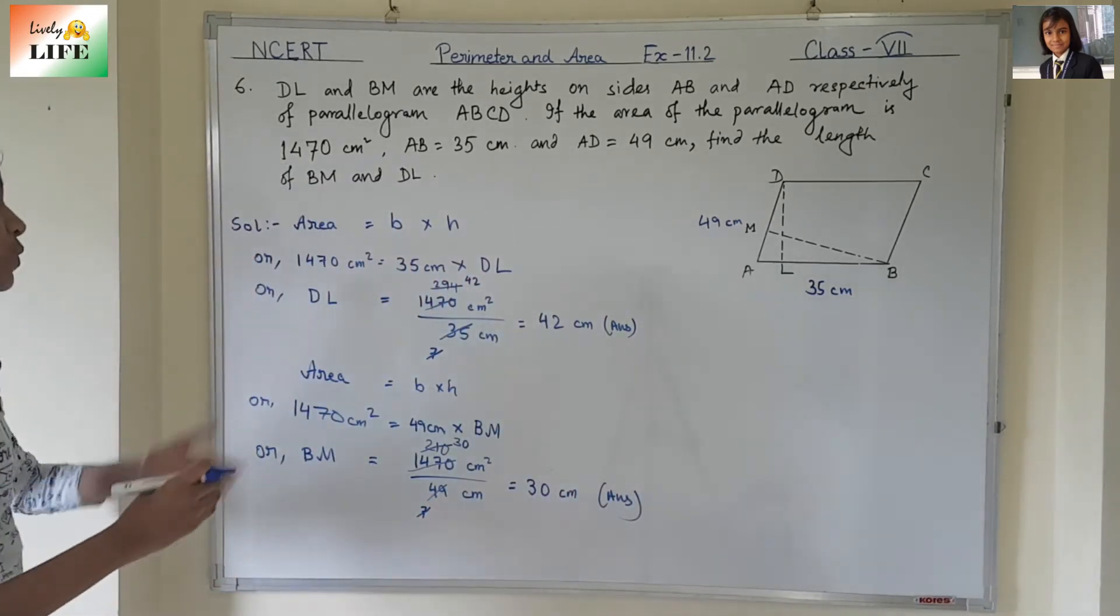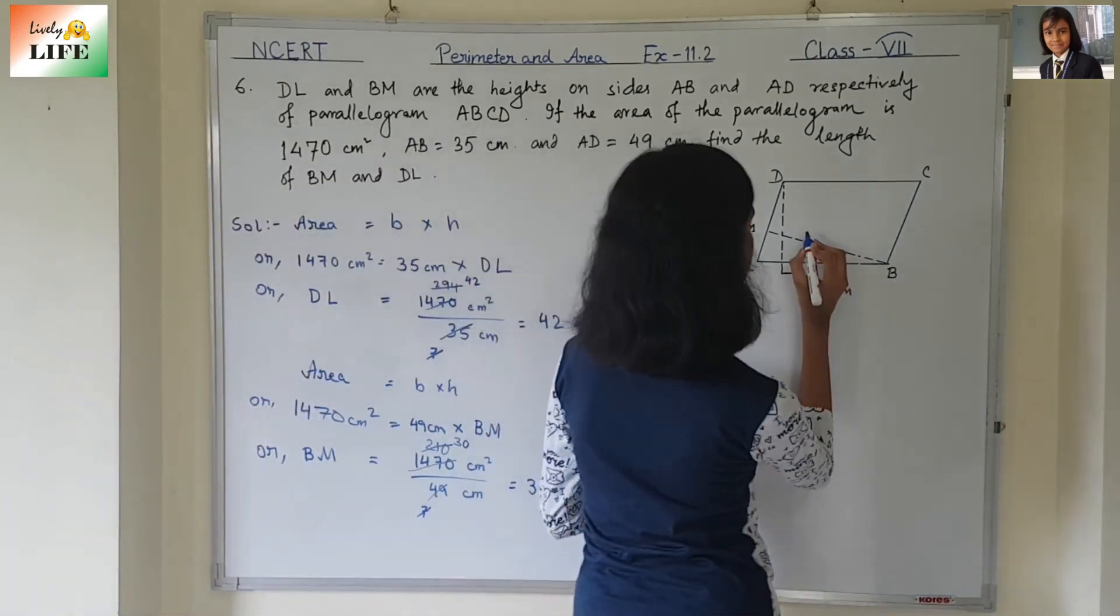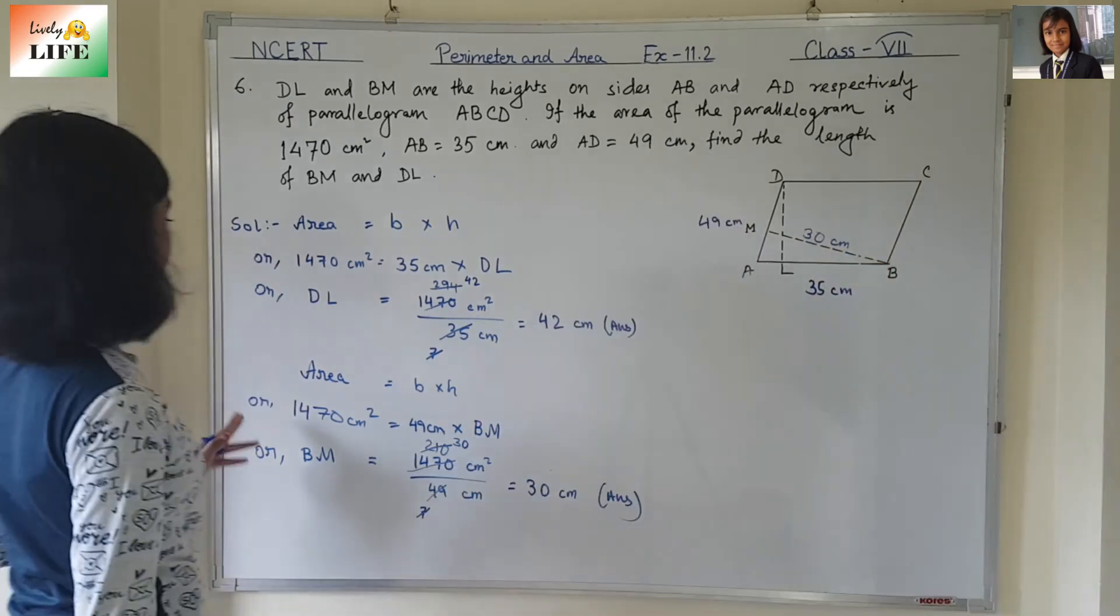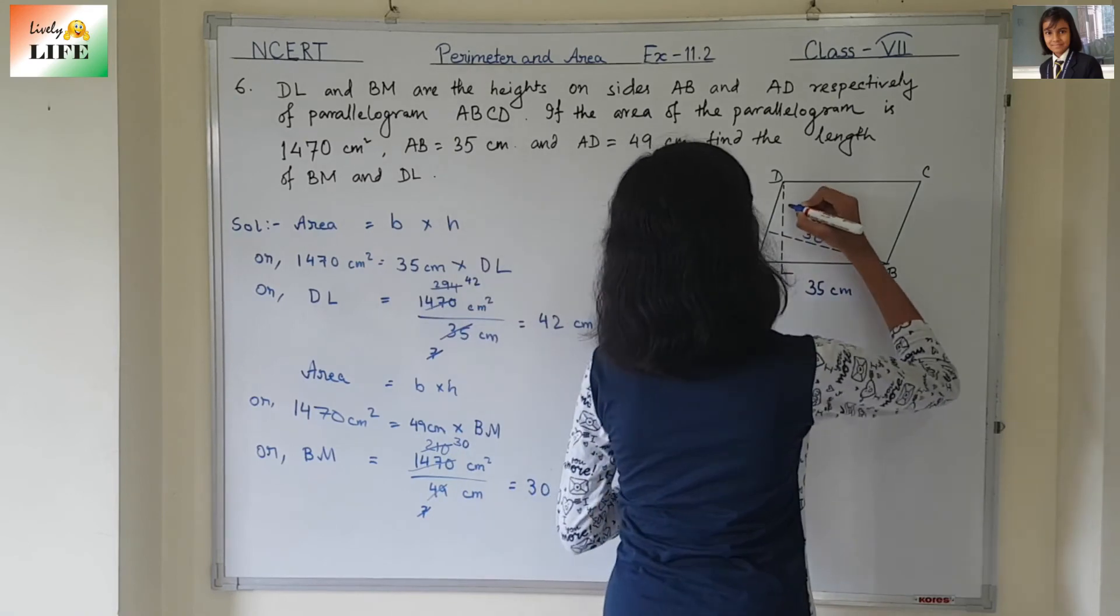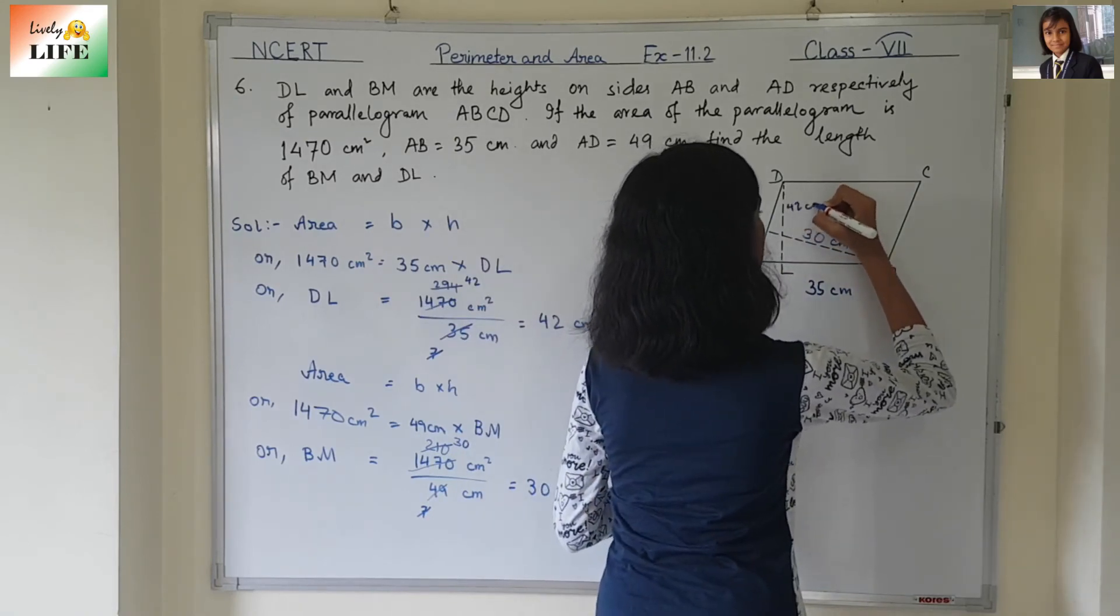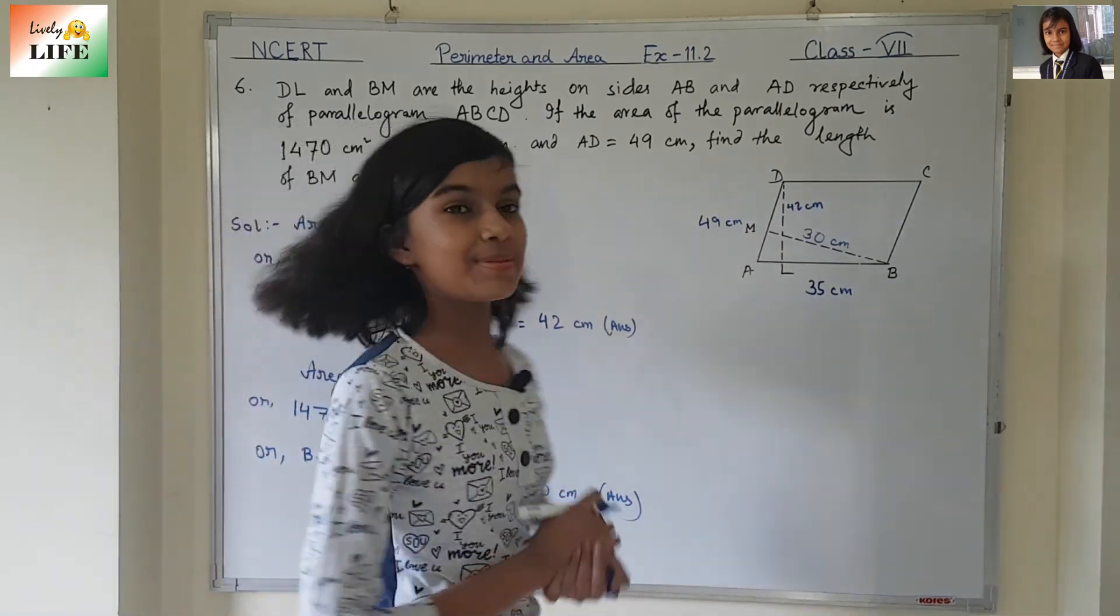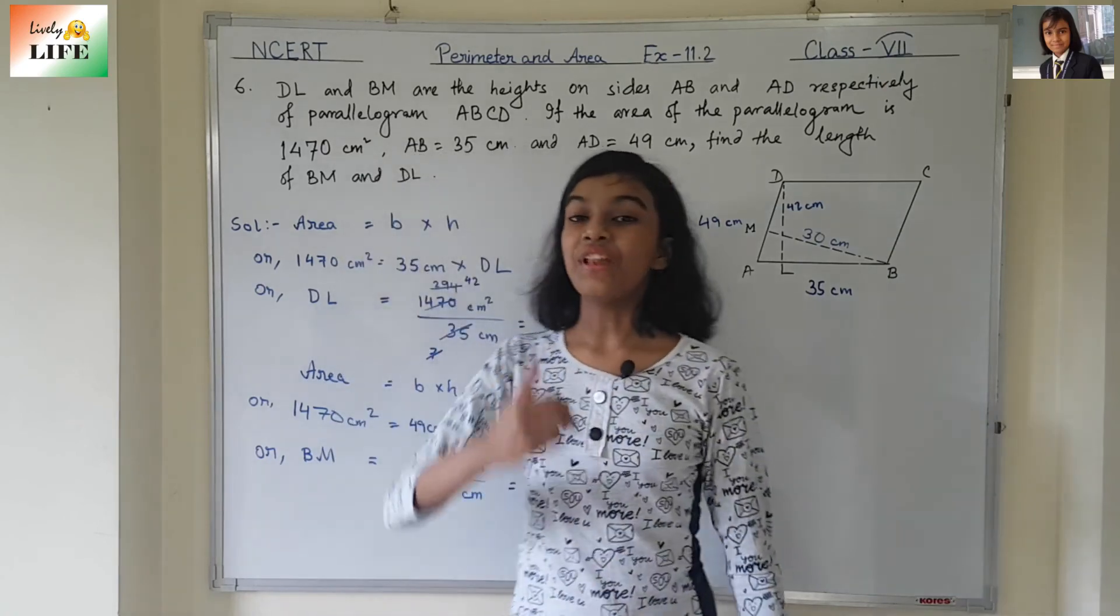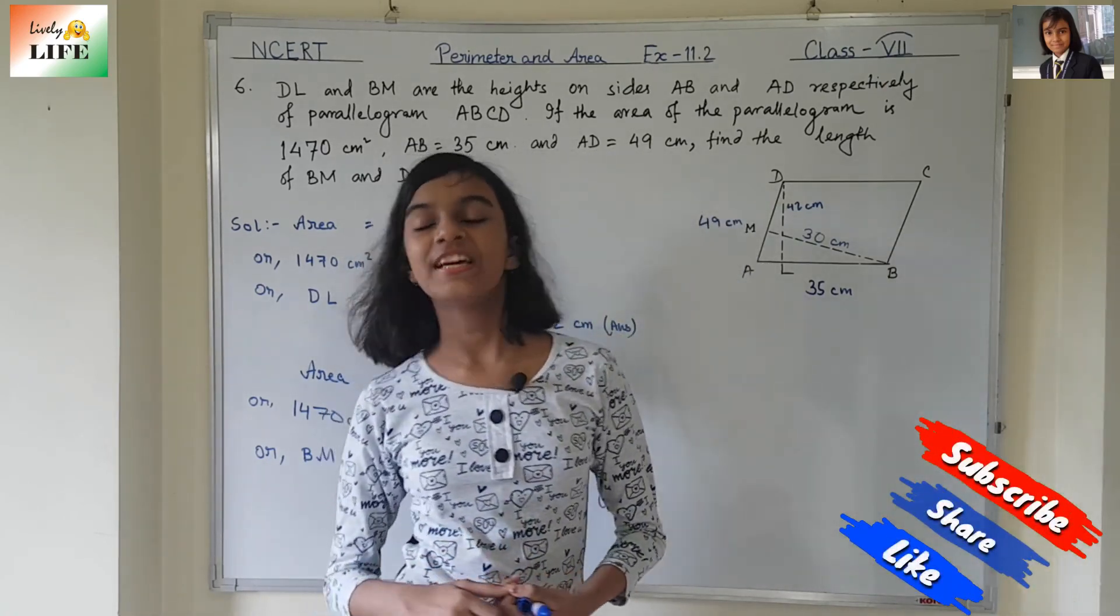So we have found out DL and BM. BM is 30 cm, and DL is 42 cm. With this, we have completed question number 6. In the next video, I am going to be back with question number 7. If you like this video, click on like button and stay with me. Please click on subscribe button. Thank you.